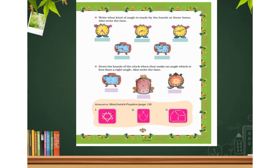The last activity: write what kind of angle is made by the hands of the clock at the time shown, and also write the time. In this activity, a watch time is shown and you have to identify which angle is made by the hands of the clock, and also write down the time shown.